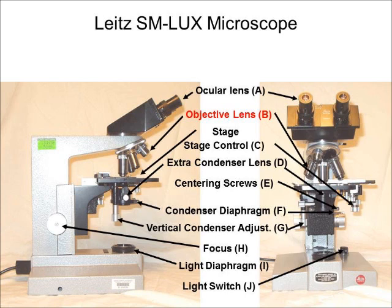Next we have the objective lenses which, as you might guess, are the lenses that are next to the object that you are viewing. For these microscopes the four objective lenses have magnifications of 4x, 10x, 40x, and 100x. This last lens requires oil immersion. The final magnification is going to be 10 times these values when you include the 10x ocular lenses.